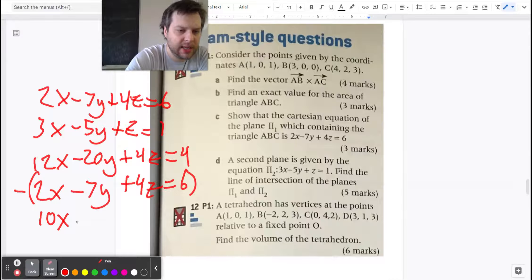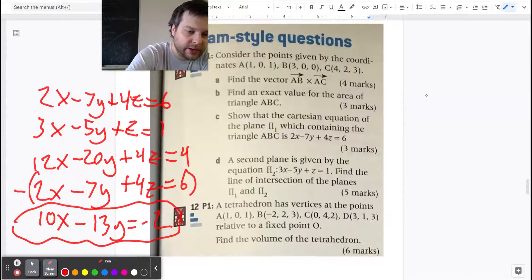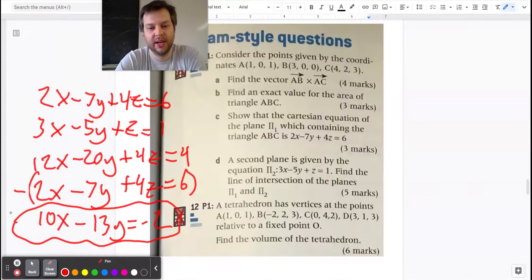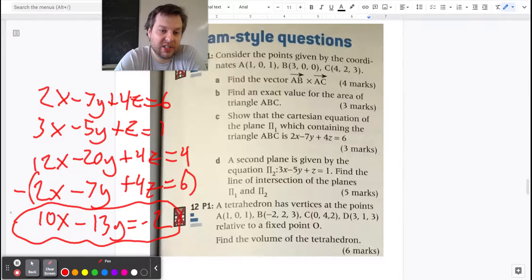Leaving me with 10x minus 13y equals negative 2. This is a perfectly fine equation of a line of intersection of those planes. It just says find the line intersection and I chose to leave it in standard form.